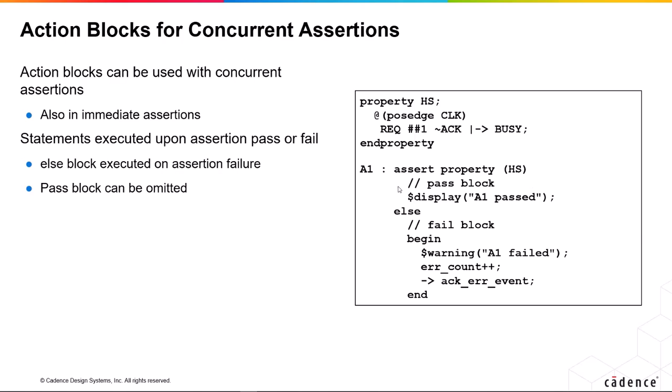We have here an example where if the property passes, this is the pass block here. We're writing a message in this case. We could have any non-time consuming action, and the fail block is everything included in else.